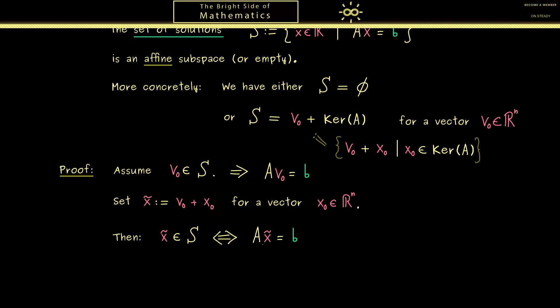More precisely, A multiplied with x̃ is equal to the vector b. However, now here on the left-hand side we can just substitute x̃ with the definition, and then it's not a surprise that we can use the linearity here. Or in other words, we use the distributive law for the matrix-vector multiplication. So on the left-hand side we then have Av_0 + Ax_0, and of course the right-hand side we don't change at all.